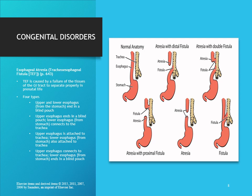Now we'll talk about congenital disorders. Esophageal atresia, also called tracheoesophageal fistula or TEF, is caused by failure of the tissues of the GI tract to separate properly during prenatal life. Most of the time this can be diagnosed while the baby is in utero because the fetus usually swallows amniotic fluid, but if there's a blind pouch, the fluid backs up and leads to polyhydramnios. It's also related to maternal diabetes, fetal infection, or multiple gestations.